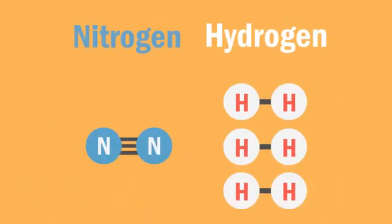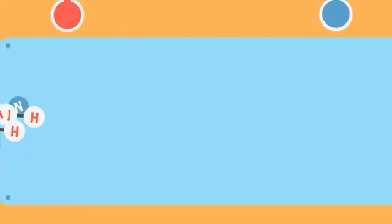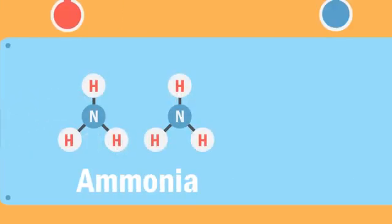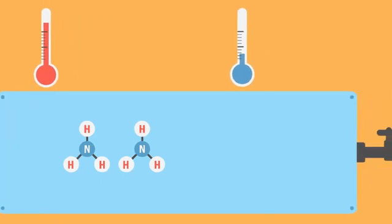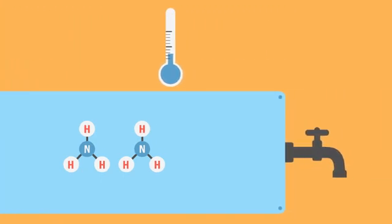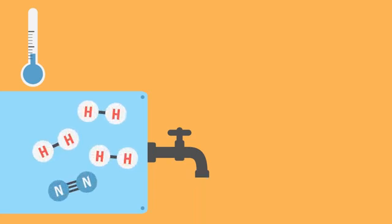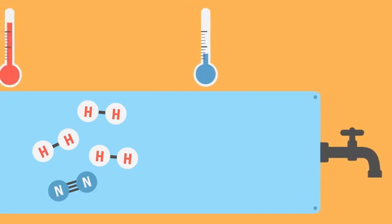These gases are then compressed and delivered to the reactor, where ammonia is produced. These gases are then cooled down and ammonia is liquefied, ready to be tapped off. Unused hydrogen and nitrogen are recycled back to the reactor.